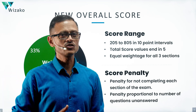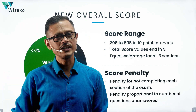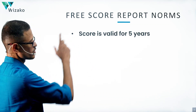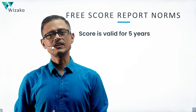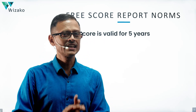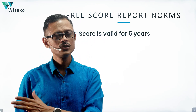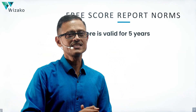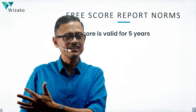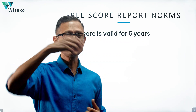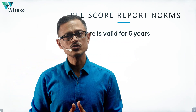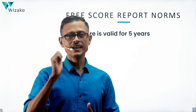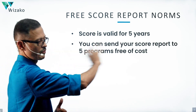In the older version, you could send score reports to five schools free of cost. Does that continue? Yes, it does. The validity of the GMAT score remains the same — five years. In the older version, the catch was you had to decide which five schools to send your scores to before you took the exam, without knowing your score. You had to guess based on your mock test performance, which made it difficult.